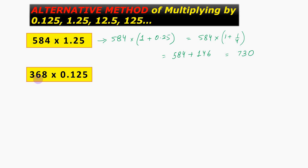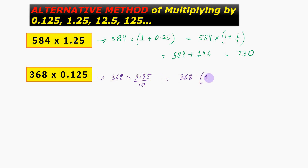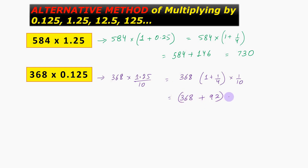The next question is 368 into 0.125. This can be written as 368 into 1.25 divided by 10. We have transformed this question into a similar form of the first question. Here we have 368 into 1 plus 1 by 4, into 1 by 10. We add 368 plus 368 divided by 4. Now 368 divided by 4 equals 92. So we add 368 and 92 and divide by 10, thereby getting 460 divided by 10, and hence the answer is 46.